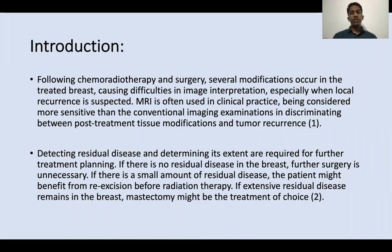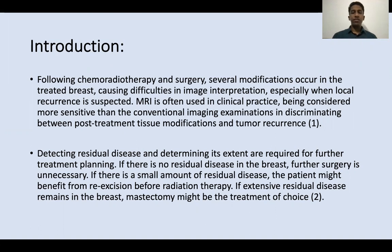Following breast conserving surgery and neoadjuvant chemotherapy for breast cancer, several modifications occur in the treated breast which can cause difficulties in image interpretation, especially when local recurrence is suspected. It becomes challenging to distinguish whether it is post-treatment tissue modification or tumor recurrence. Detecting residual disease and determining its extent is important for further treatment planning — whether no further surgery, re-excision, or mastectomy is needed.